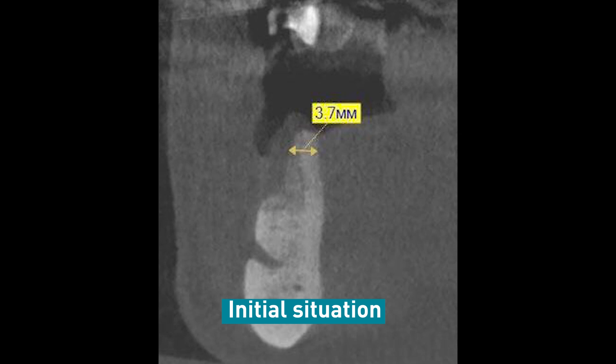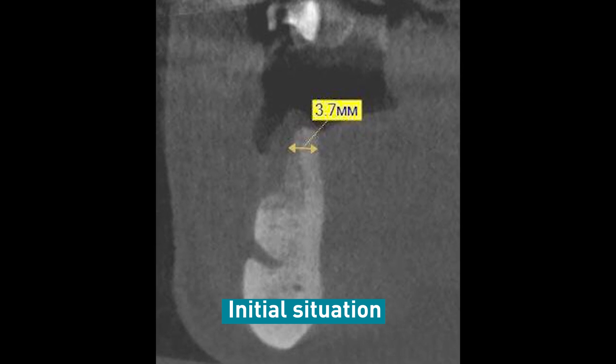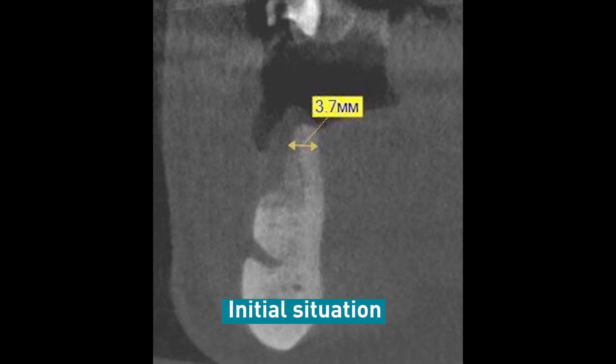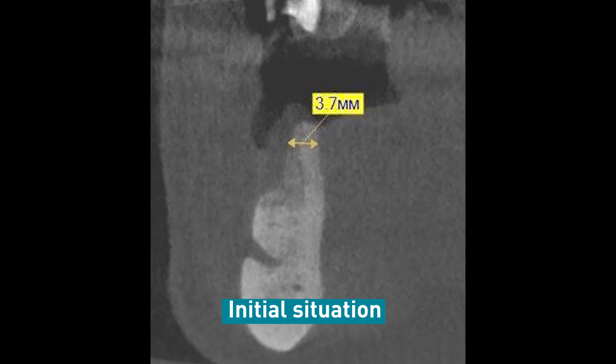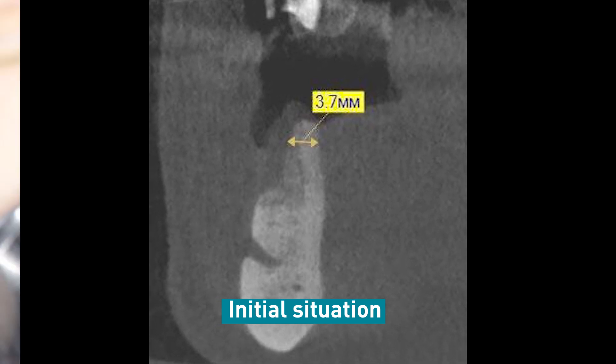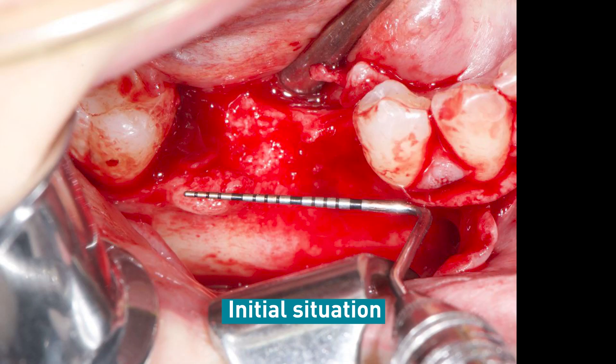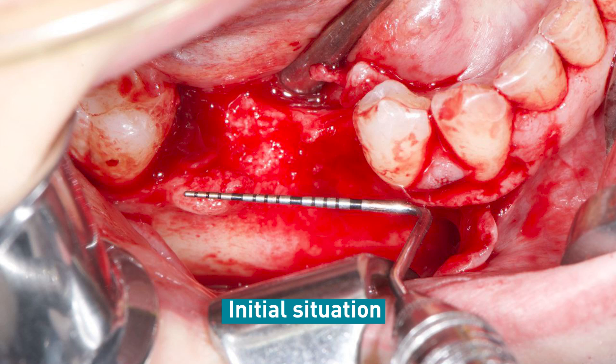CBCT before the operation demonstrates thin bone of the alveolar ridge. This situation is a clear indication for bone grafting.